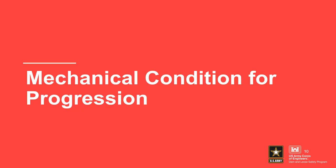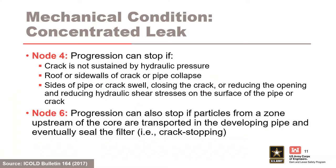Progression can stop if a crack is not sustained by hydraulic pressure, if the roof or sidewalls of a crack or pipe collapse, or if the sides of a pipe or crack swell, either closing the crack or reducing the opening size, which reduces the hydraulic shear stresses on the surface of the pipe or crack. Progression can also stop if particles from a zone upstream of the core are transported into the developing pipe and eventually seal the filter. This would be called crack stopping.